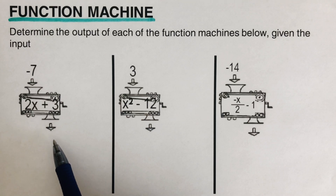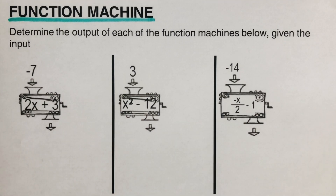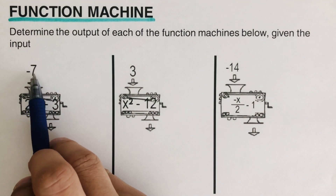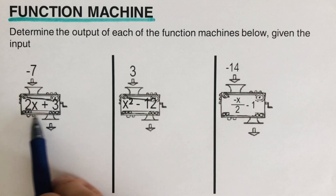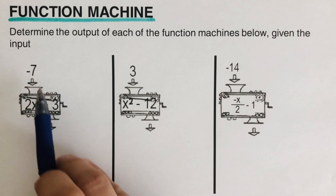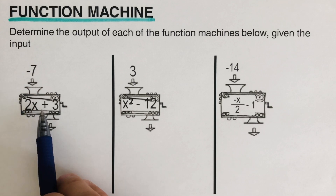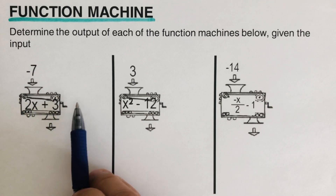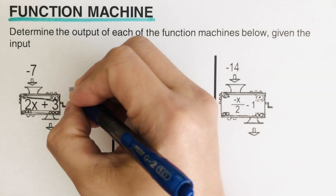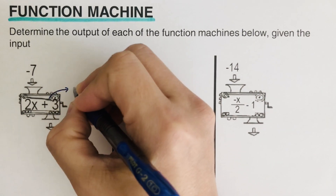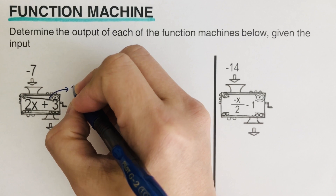Evaluating a function machine is pretty much like evaluating a function. In this problem, we are dropping negative seven into the machine. Looking at this machine, the negative seven will be multiplied by two and then added by three. We can show the work on the side — this is what's going on inside the machine.